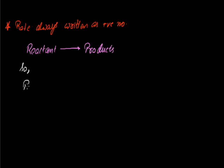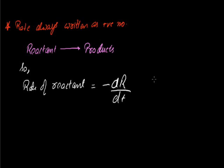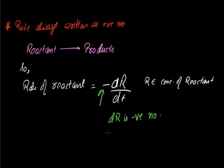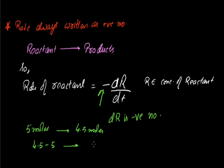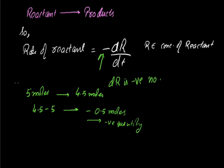One more thing to note is that rate is always written as a positive number in general. So the rate of a reactant will be minus dR by dt, where R represents the concentration of the reactant at any time. We put this minus sign because dR is a negative number — the concentration of the reactant is decreasing. For example, if initially you had 5 moles of reactant and later 4.5 moles, the change is 4.5 minus 5 equals minus 0.5 moles, which is negative. Since rate is always represented as a positive number, we add an additional minus sign to make it positive.